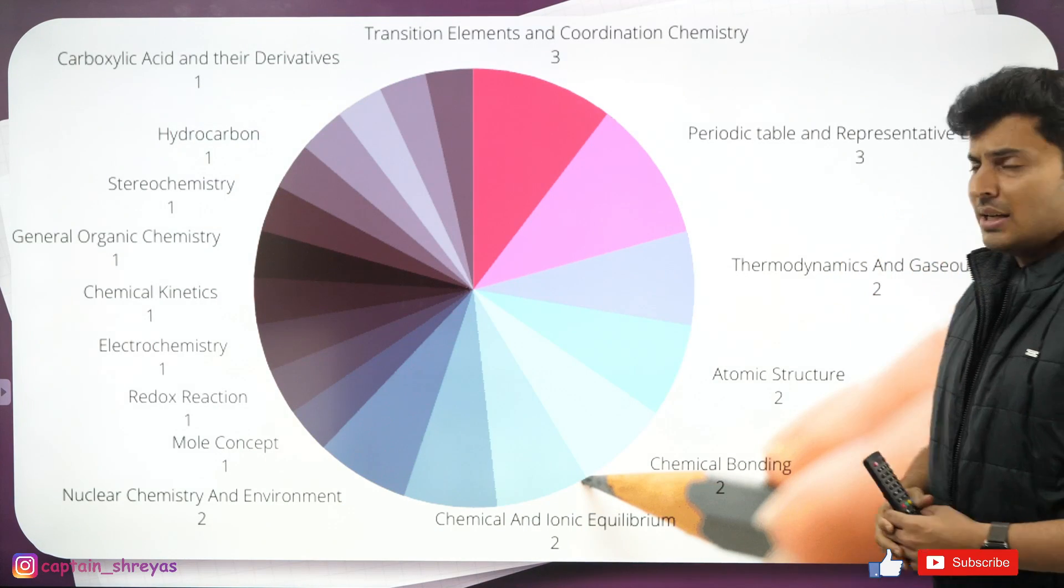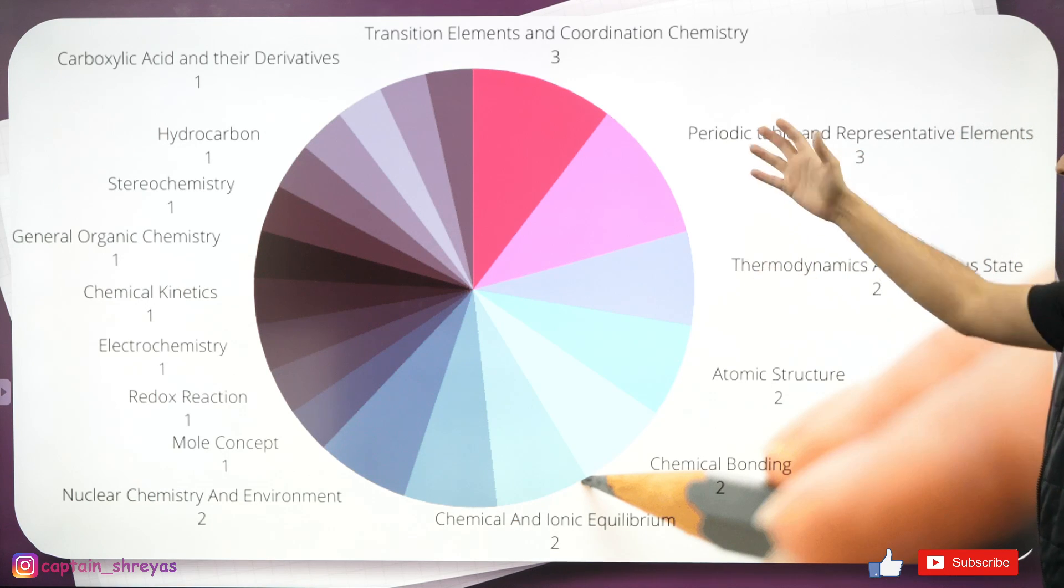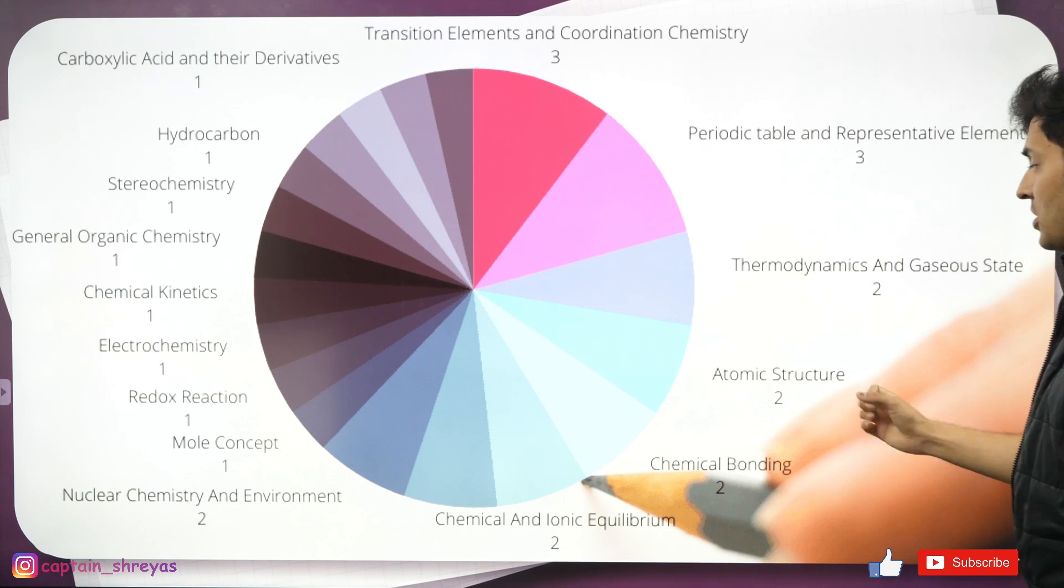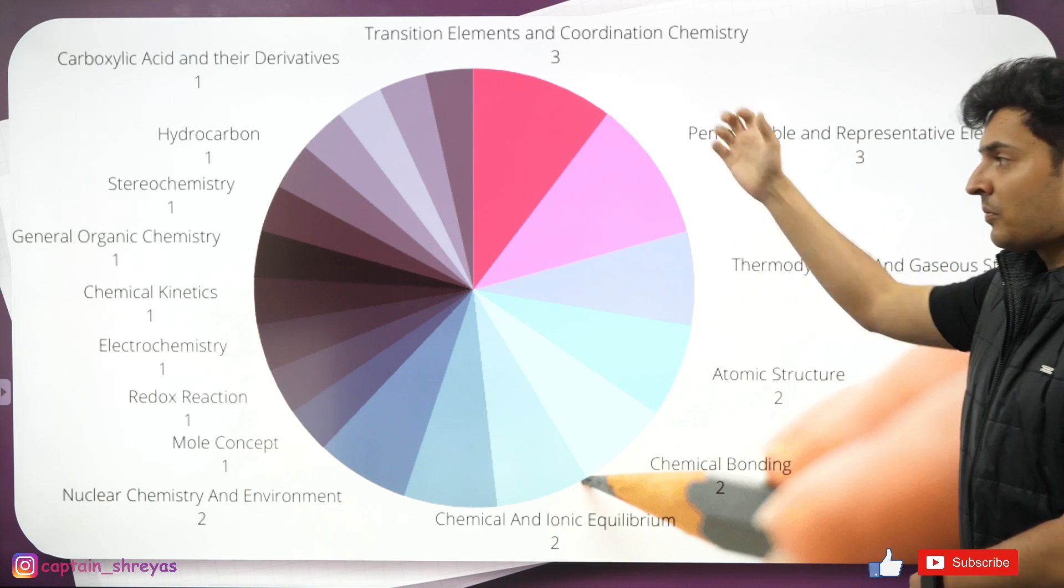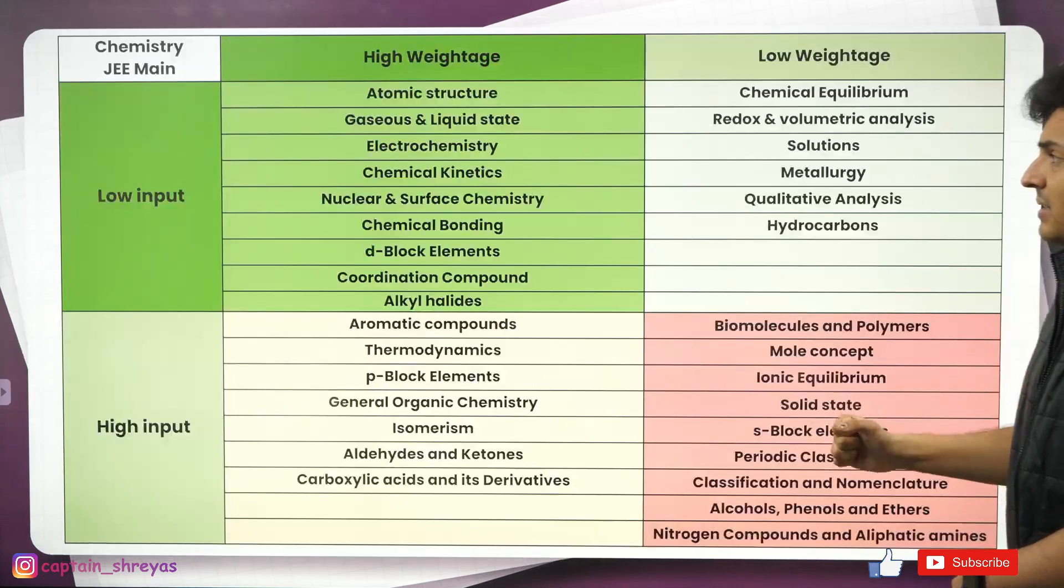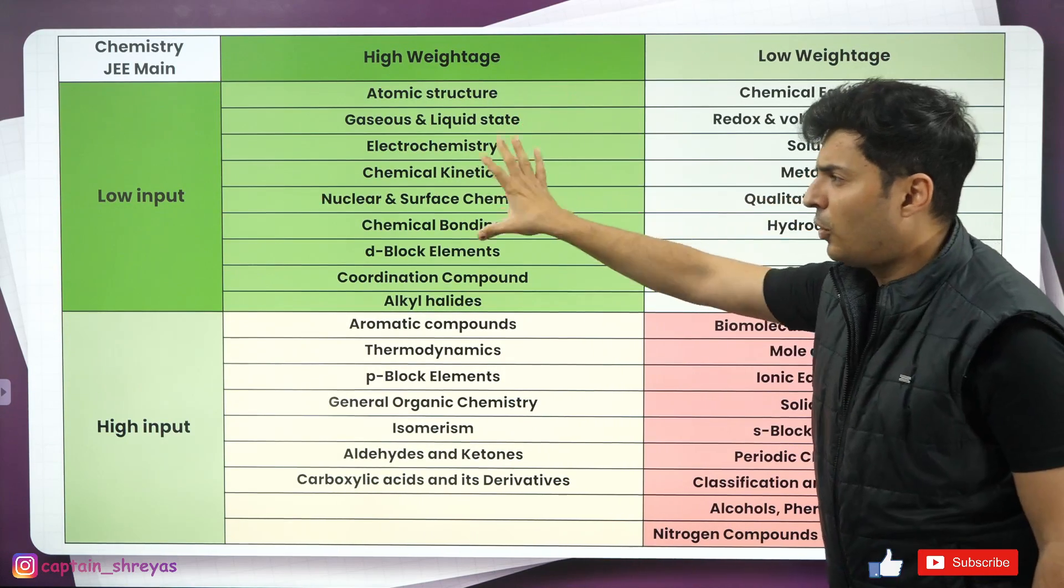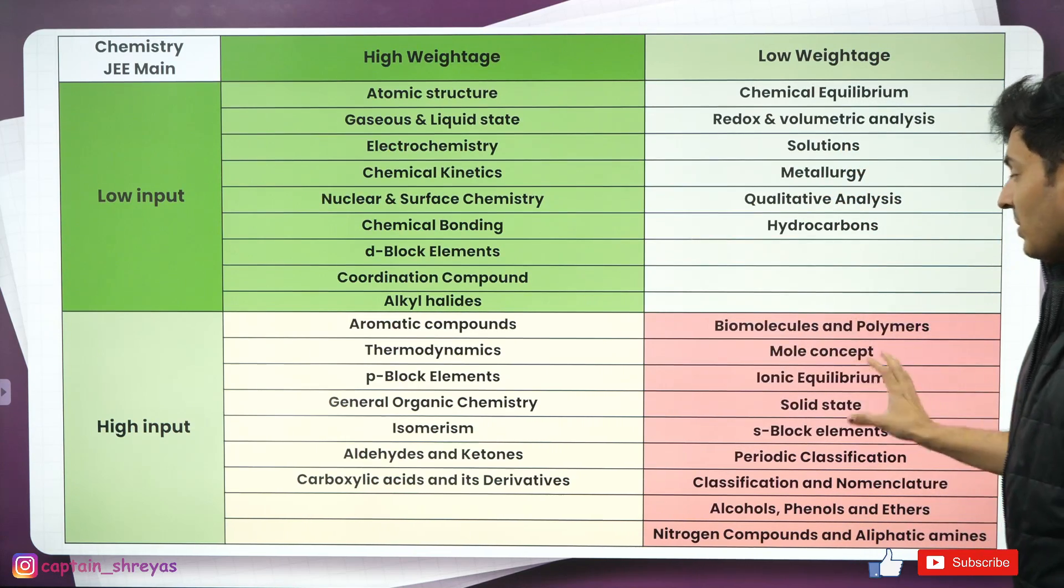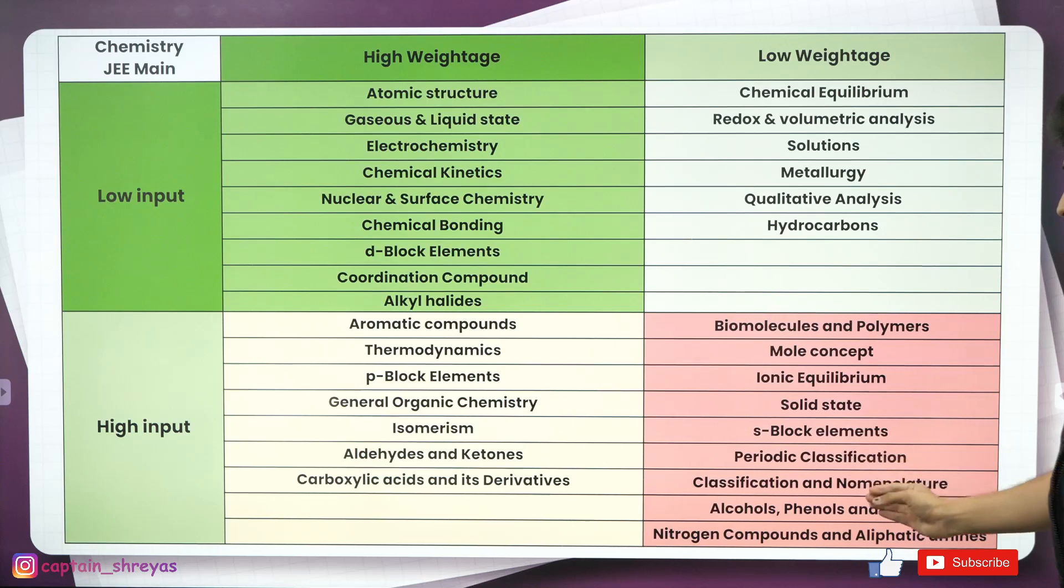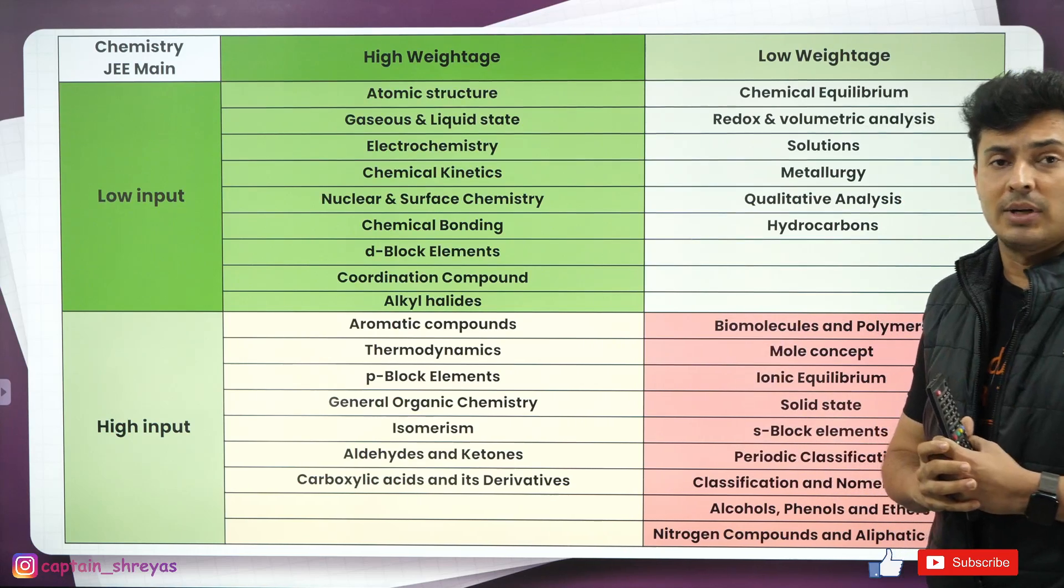So you can see certain topics like periodic table, your coordination chemistry transition, thermodynamics, gaseous state, atomic structure, chemical bonding, all these topics are heavyweight topics. But like we discussed before in physics, these topics need to be divided into four categories. So again, very high weightage, low input. So your complete focus over here. You can skip chapters like biomolecules, mole concept, ionic equilibrium, solid state, s-block, periodic table classification, alcohols, nitrogen and still get above 95 to 97 percentile.